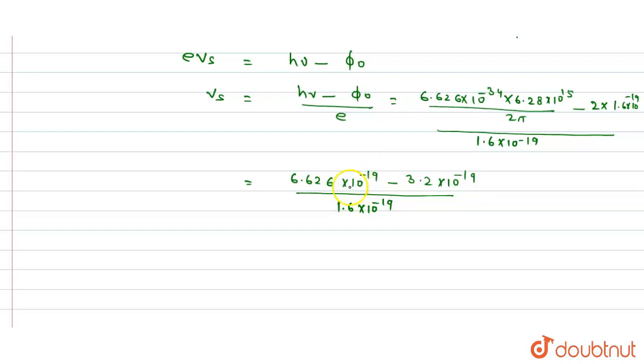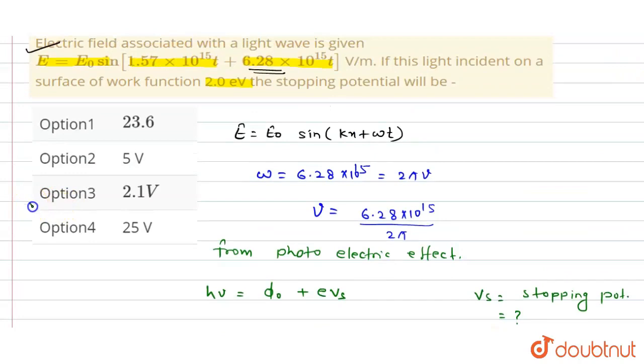If we take 10⁻¹⁹ common, this will be cancelled out, and so we get the value equal to 2.13 volts. This is the required stopping potential. Now we check the options, and this matches with option three, so this is the right answer.